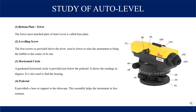Through the leveling screw, the instrument is leveled. The bubble attached to the instrument is centered by rotating the screw clockwise or counter-clockwise, bringing the instrument to a level position. Its purpose is to lower or raise the instrument to bring the bubble to the center of its run.